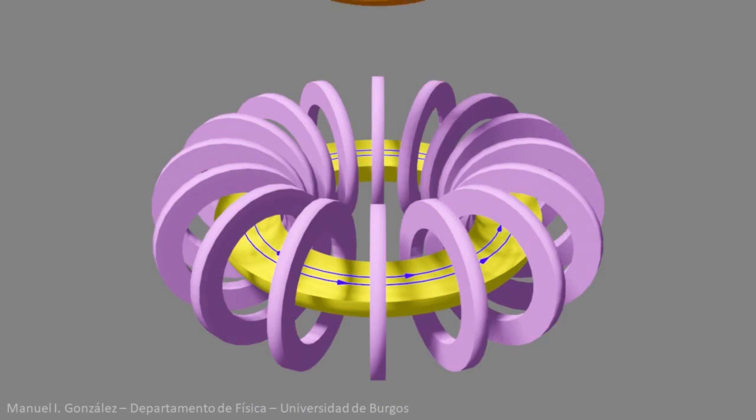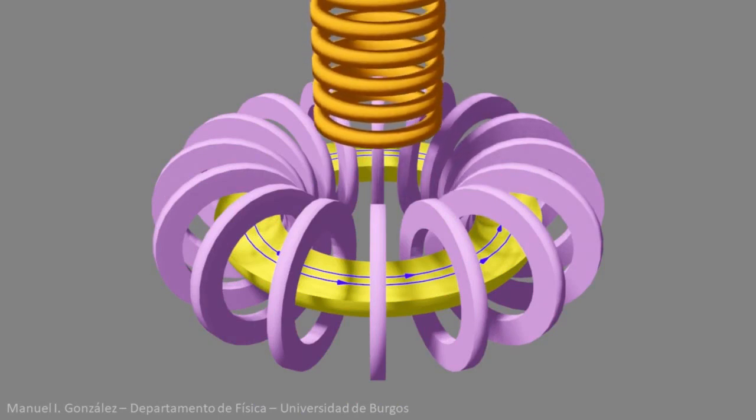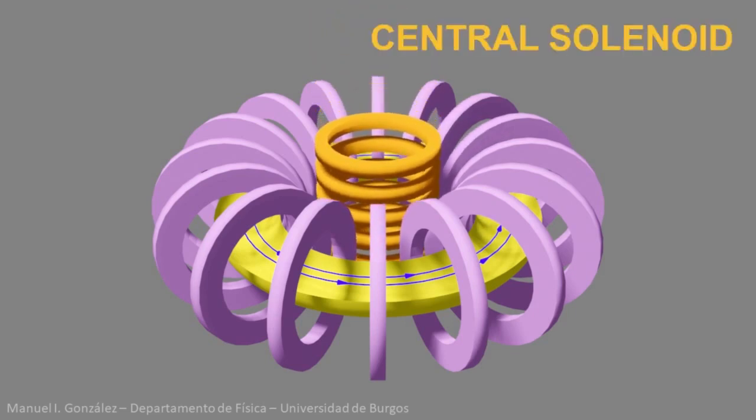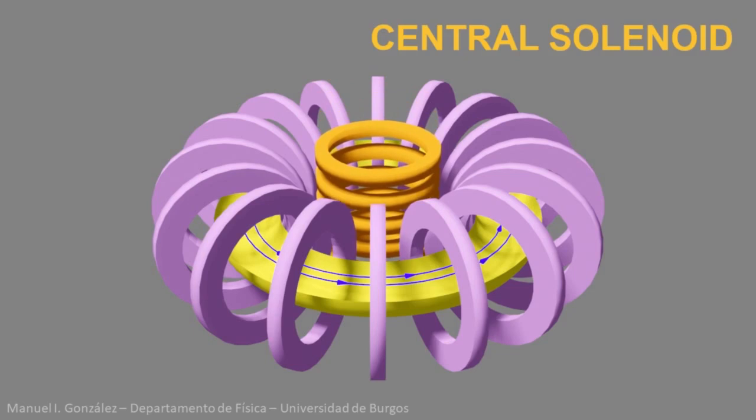On the other hand, the plasma must be heated up to temperatures of the order of 100 million degrees. Part of the work is done by a second set of coils, the so-called central solenoid. To understand how it works, let's do an experiment.